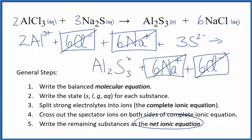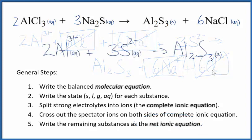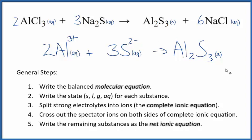I'll clean it up, put the states in. We'll have our net ionic equation. So this is the balanced net ionic equation for aluminum chloride and sodium sulfide.